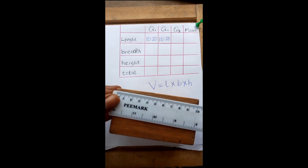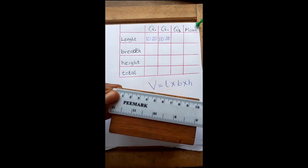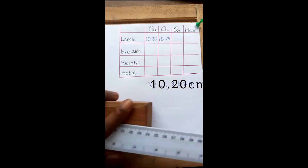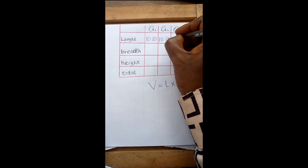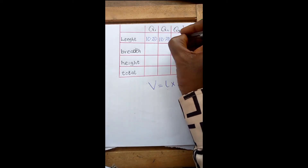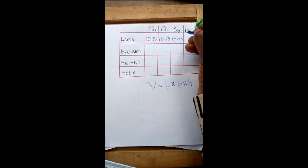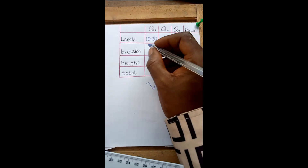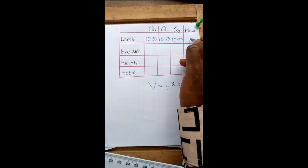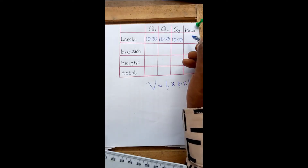Then measure it the last time — I still have 10.2 cm. You can go ahead and add the three of them together and divide by three to get their mean value.